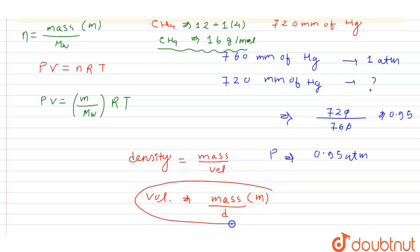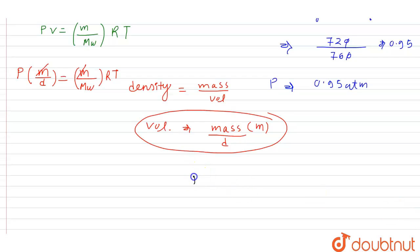Substituting volume into the ideal gas equation: P times m over d equals m over MW times RT. The final formula we need to solve is P over d equals RT over MW.